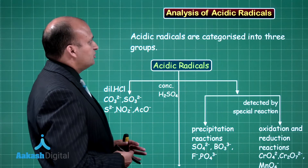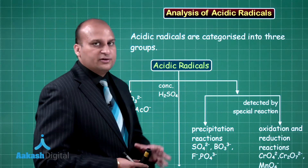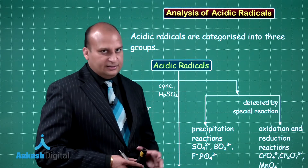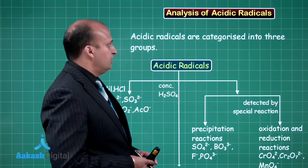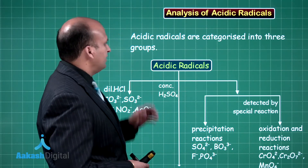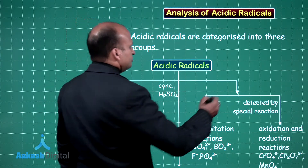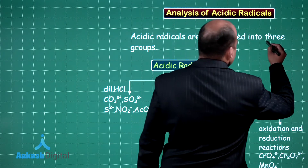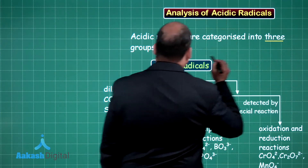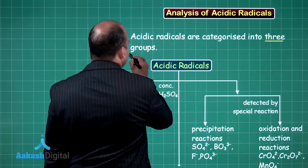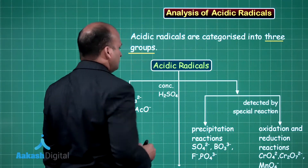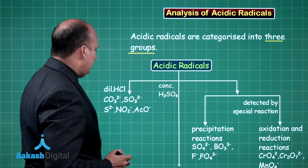First, we will talk about the analysis of acidic radicals. Acidic radicals are categorized into three groups.